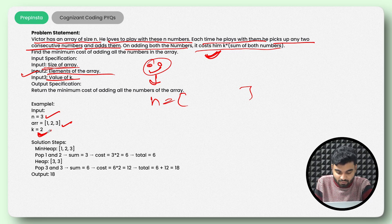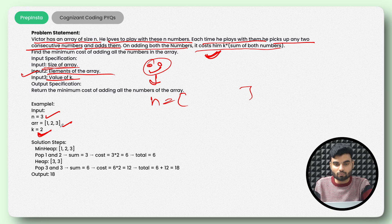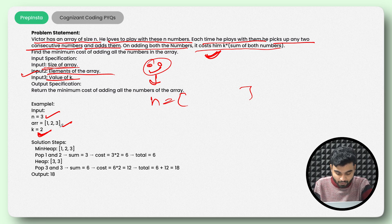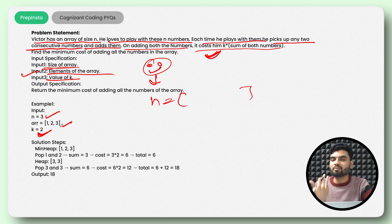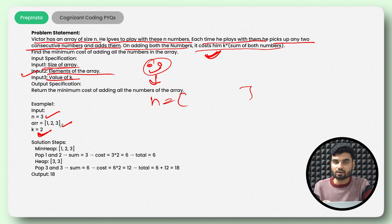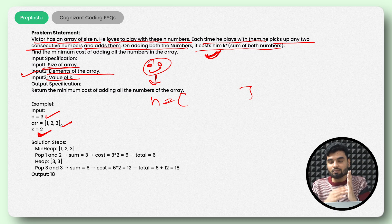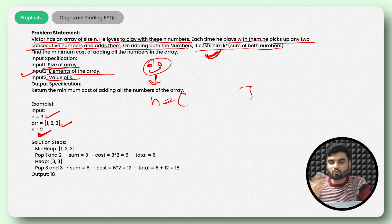You will have the minimum cost only when you have the minimum sum — if the sum is higher, the cost will be higher. One way is to sort the array, find the two lowest values, get their sum, push it back, and sort again. But that takes O(n log n) time complexity every iteration and is not a good approach. Instead, think of a data structure that already gives you the minimum value on top.